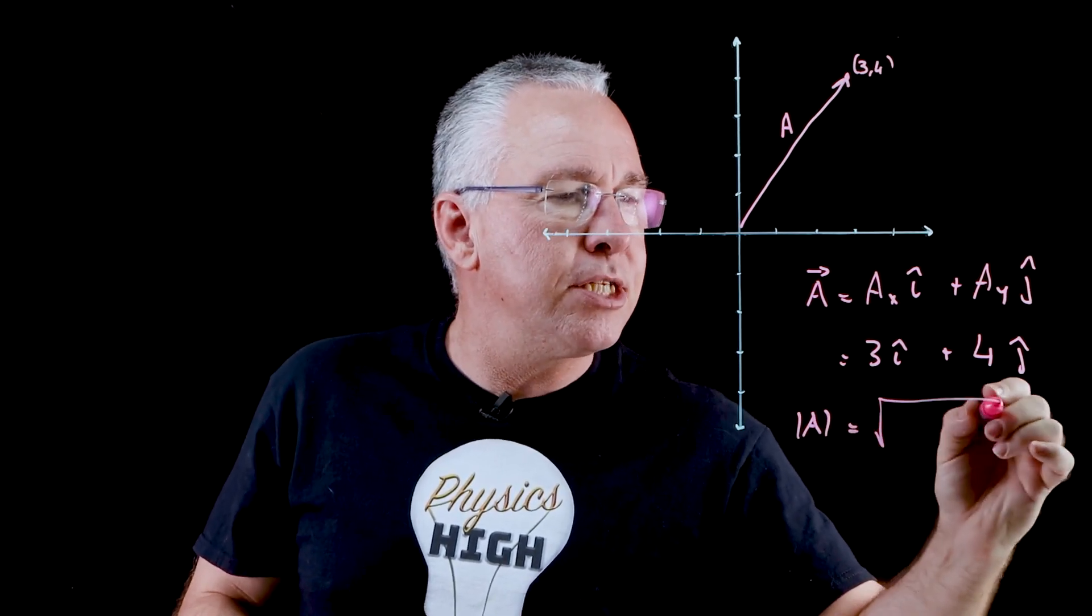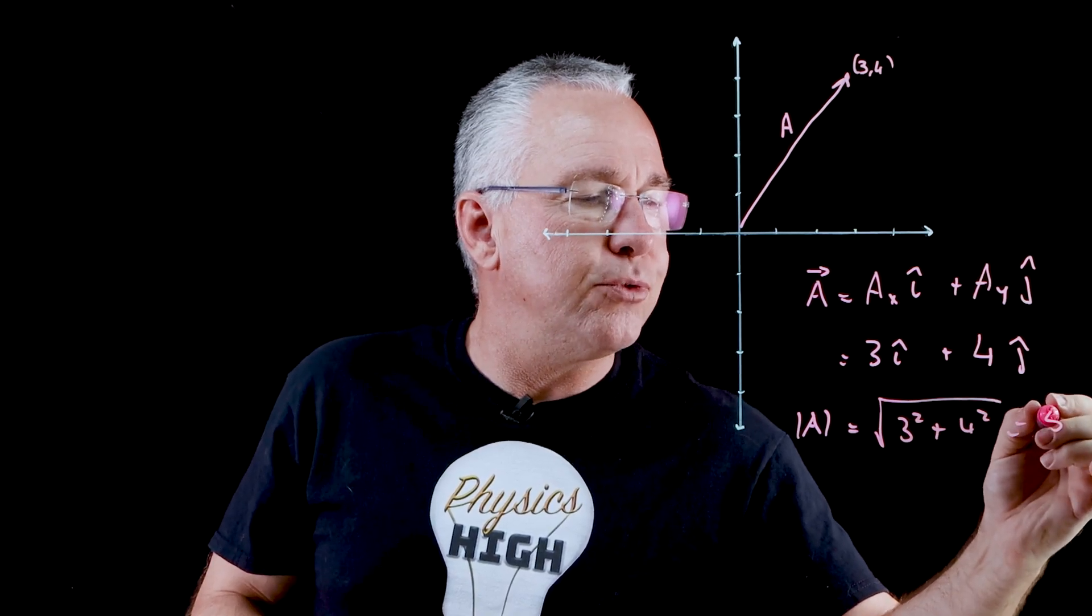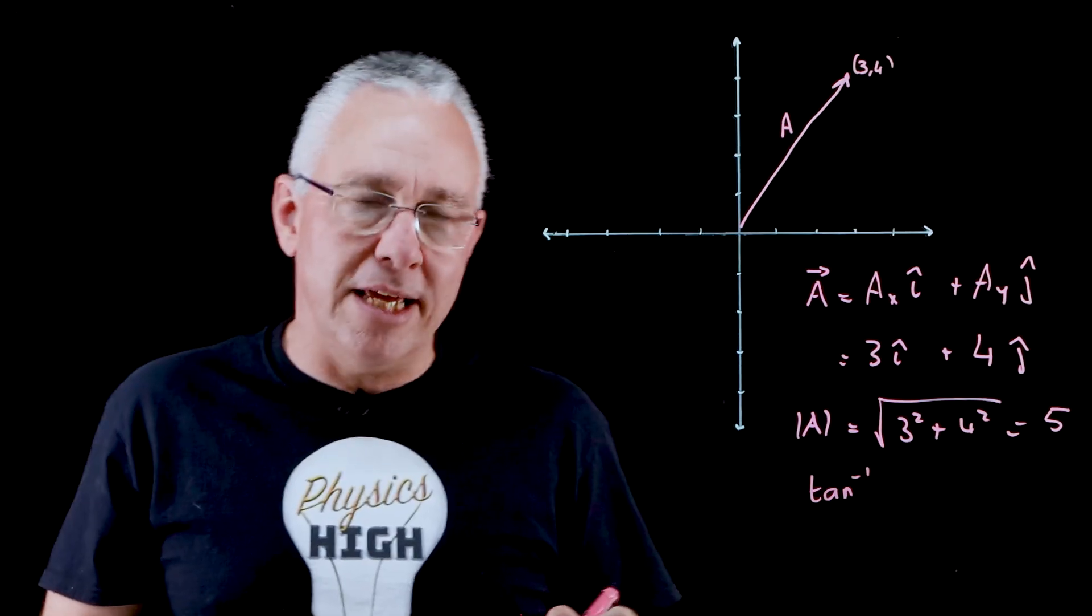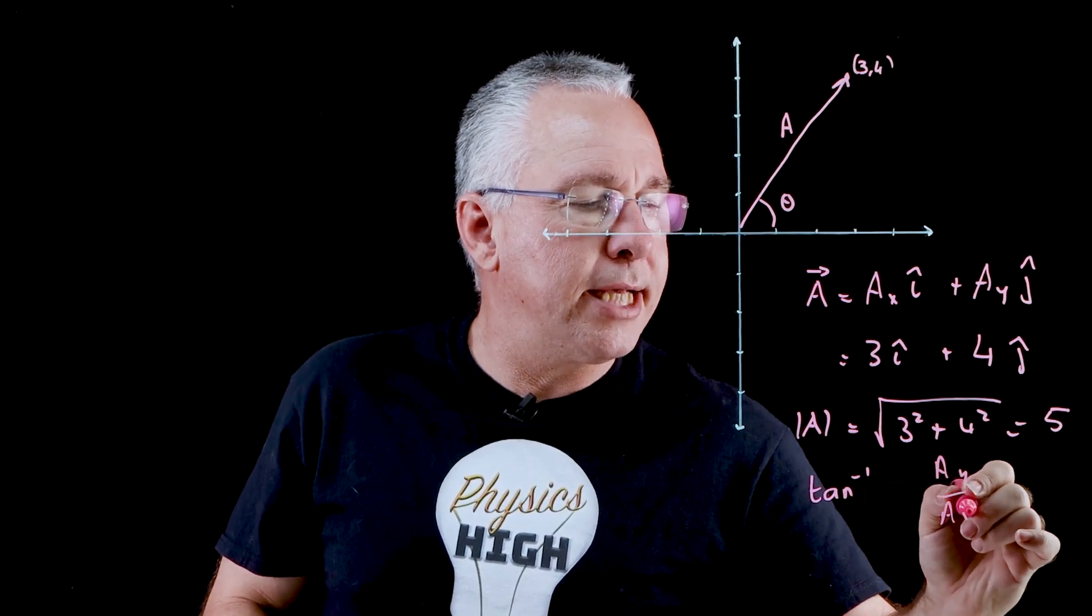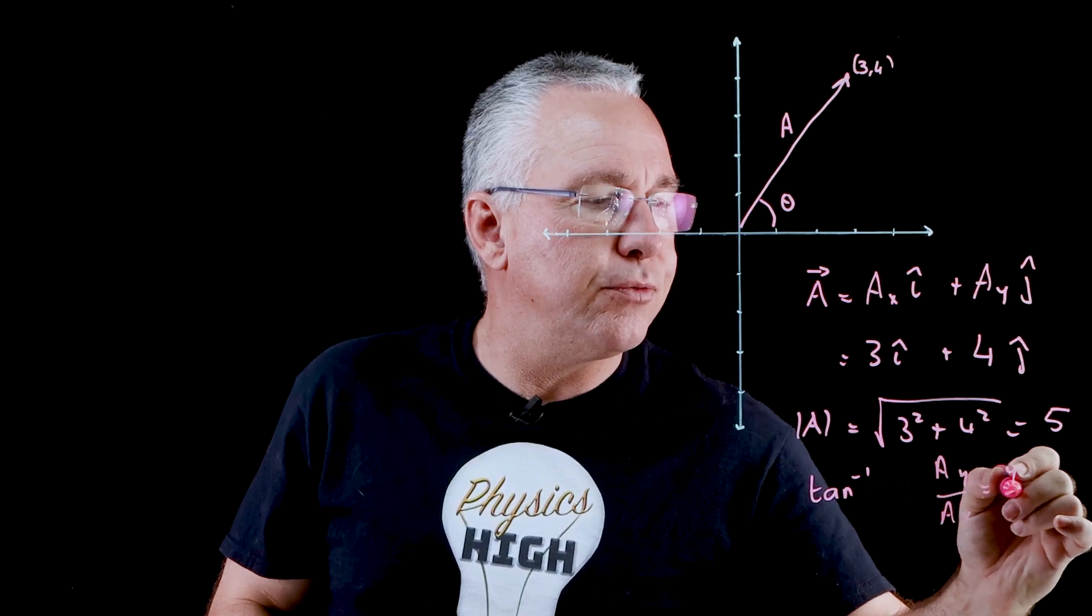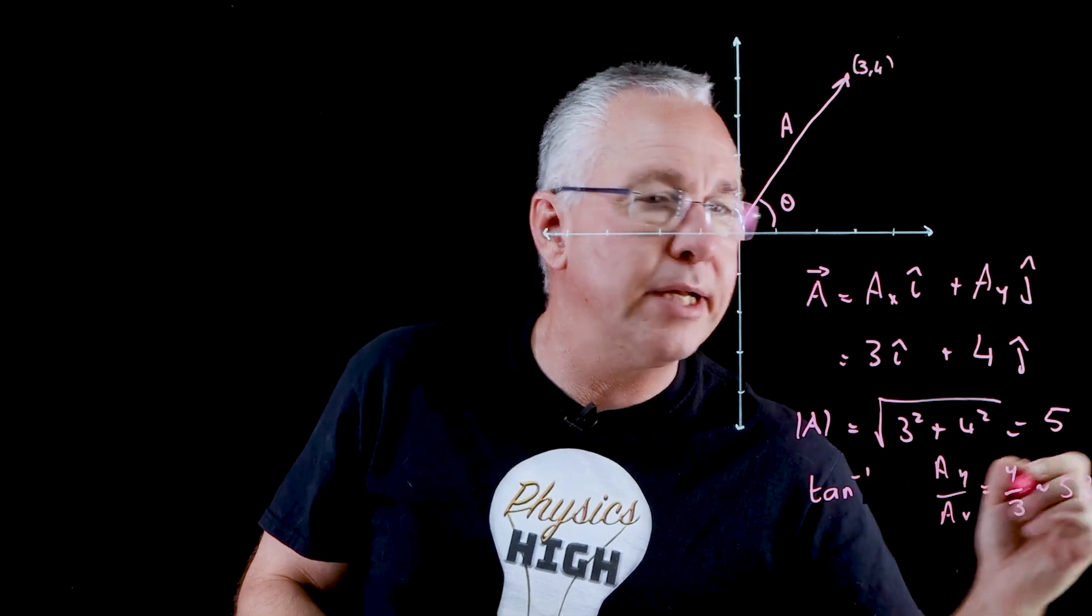In other words, it's Pythagoras, and so we just simply have three squared plus four squared, and of course that is equal to five if we square root it. The inverse tan of y component over my x component, that's of course equal to four over three, I'm going to get approximately 53 degrees.